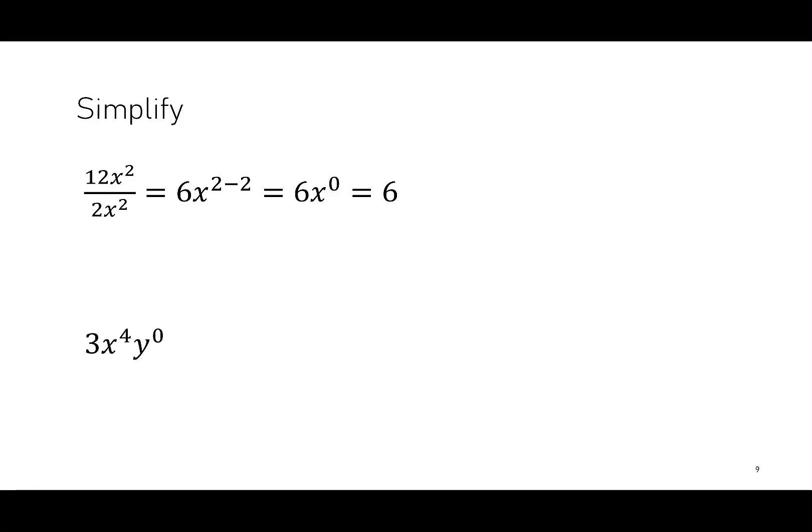Let's try that again with 3x to the 4th times y to the 0. Hopefully we notice that y to the 0 is equal to 1. If I multiply 1 times 3x to the 4th, I just get 3x to the 4th.